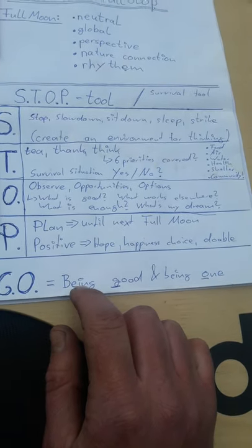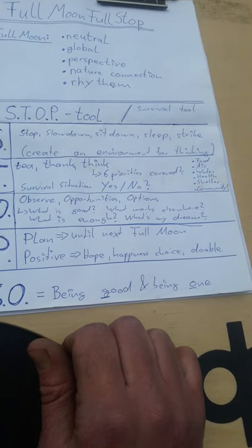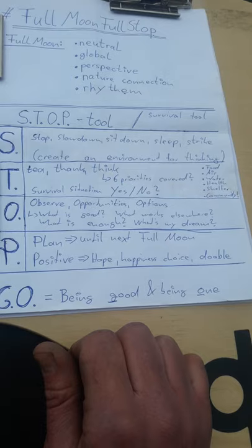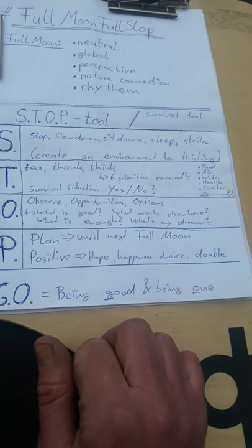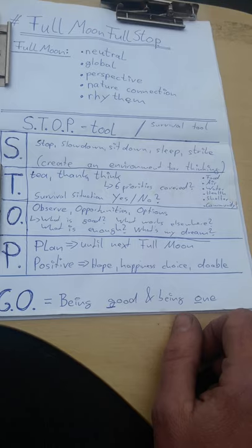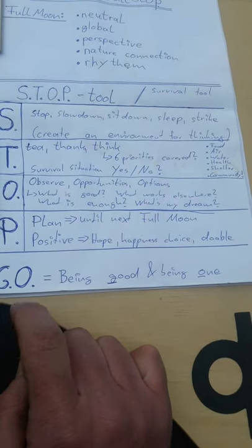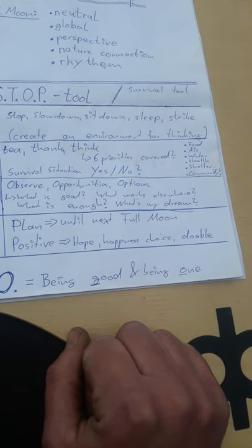A big part of the letter P is also the choice of being positive. In a survival situation you choose to be positive — if you believe, if you have hope, if you think 'we might have a chance, we might be able to do it,' then the odds that something works out in your advantage are much, much higher. Consider this: being positive, even if it means fake it till you make it. After the STOP, of course, comes GO — and to me, the goal means just to be good and be one, because we are one species on this planet.